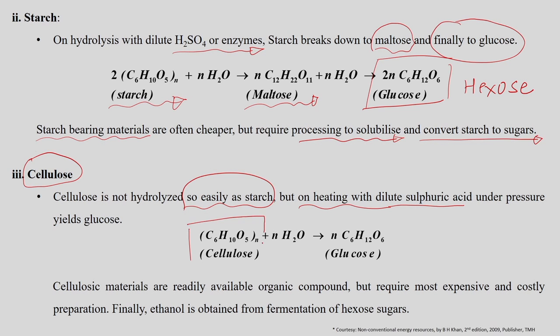Cellulose is not hydrolyzed as easily as starch. On heating with dilute sulfuric acid under high pressure, cellulose is converted into reducing sugars. Cellulosic materials are readily available but require the most expensive and costly preparation. The reducing sugars from cellulose can then be converted into ethanol using the alcoholic fermentation technique.